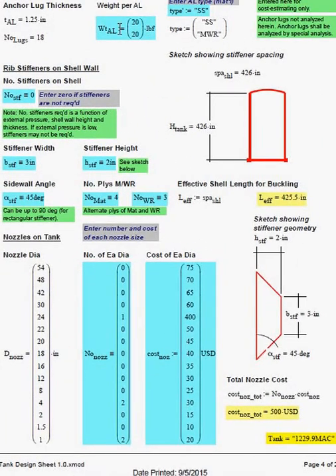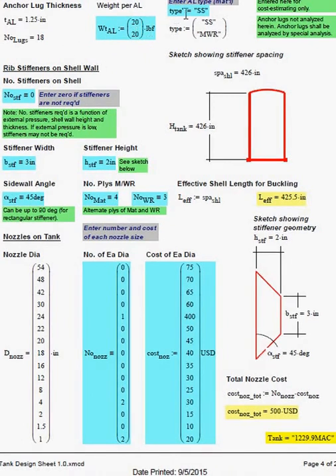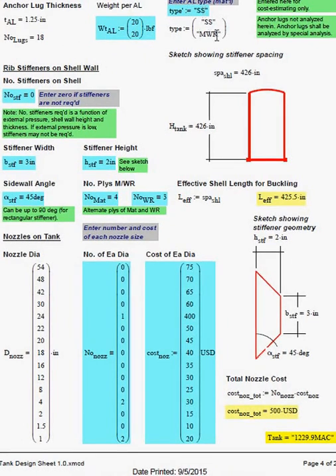Anchor lugs are input on page 4, including the number of and the weight of the anchor lugs, and whether the type is stainless steel or mat woven roving.